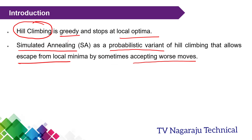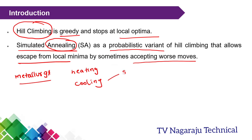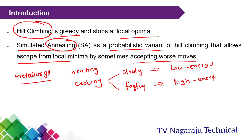Before going to artificial intelligence, let me give a basic introduction: what is the term annealing? The term annealing comes from metallurgy. Annealing involves heating a metal and then cooling it. The cooling is performed in two ways — either slowly or fast. If you cool the metal slowly, the atoms enter into a low energy state. If you cool the metal fast, the structure may freeze or become defective and enter into a high energy state.